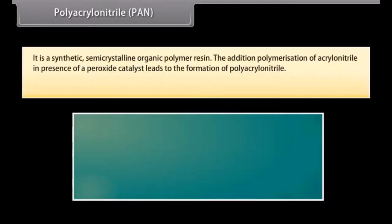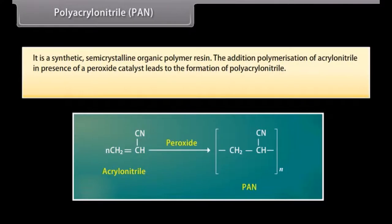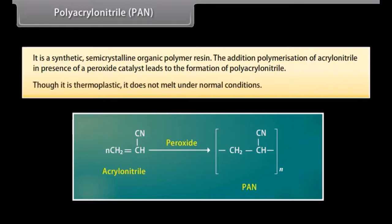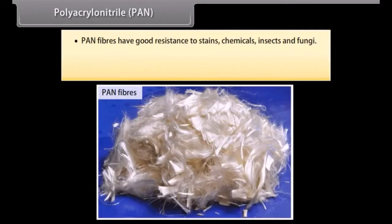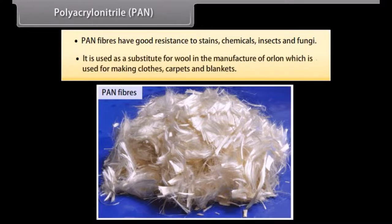Polyacrylonitrile (PAN): it is a synthetic semi-crystalline organic polymer resin. Addition polymerization of acrylonitrile in the presence of a peroxide catalyst gives polyacrylonitrile. Though it is a thermoplastic, it does not melt under normal conditions. PAN fibers have good resistance to stains, chemicals, insects, and fungi. It is used as a substitute for wool in the manufacture of Orlon, which is used for making clothes, carpets, and blankets.